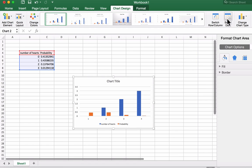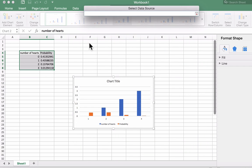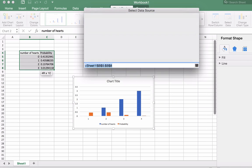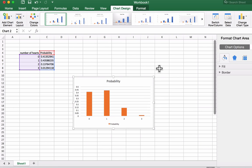I'm going to choose select data, and I'll remove, because I want probability to be my dependent variable, so I'm going to remove number of hearts from that. And for the horizontal axis, I'm going to select the hearts, 0, 1, 2, 3, the number of hearts. There's our probability distribution.